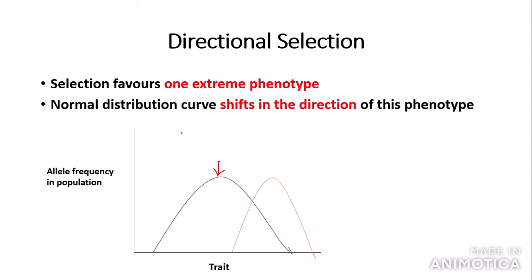However, once selection has taken place, the alleles of the extreme phenotype — the long neck — become higher in frequency, and the curve naturally shifts in the direction that the phenotype lies. On one side of the graph we have a shorter neck, on the other a longer neck. The allele frequency shifts towards the longer neck, as that is the advantageous phenotype.